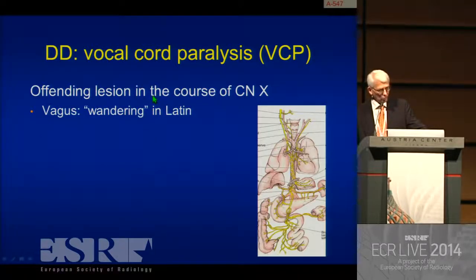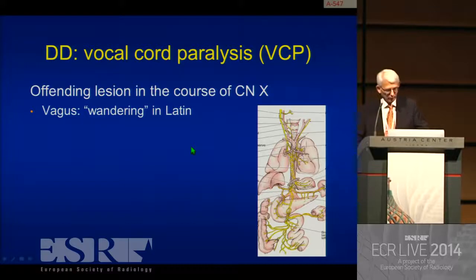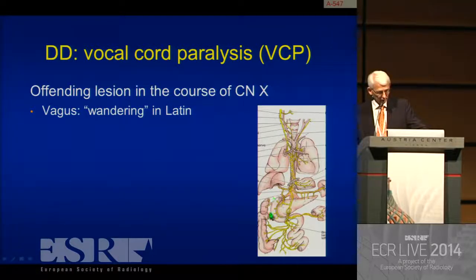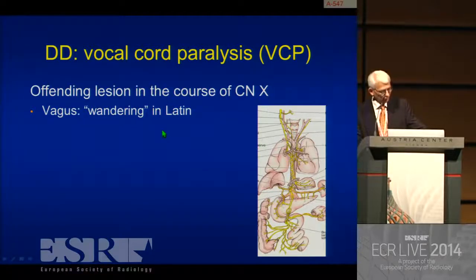And then we have vocal cord paralysis — VCP. The offending lesion is in the course of cranial nerve 10, the vagus nerve — in Latin, the wandering nerve. You see this nerve wandering from the skull base through all kinds of areas of the body to the heart, stomach, esophagus, and the gut. And also, we have these two interesting branches which go into the recurrent laryngeal nerves.